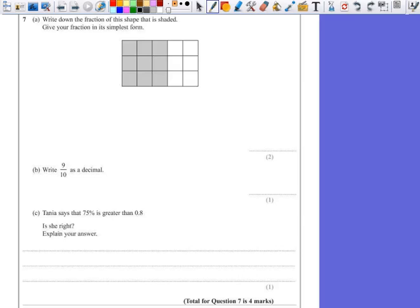Question 7, Part A. Write down the fraction of this shape that is shaded, giving the answer in its simplest form.